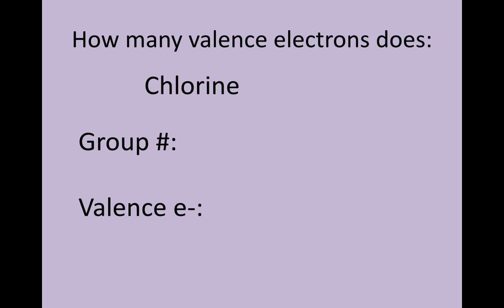Let's try another one. Chlorine. What group is chlorine in? Chlorine is in group 17, so we get rid of this number one. So it has seven valence electrons. Let's try one last one.